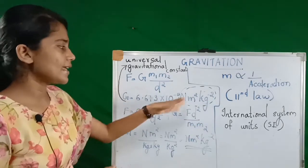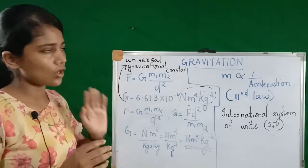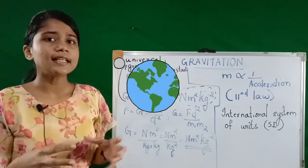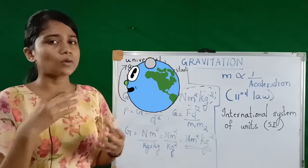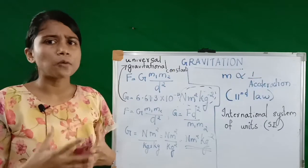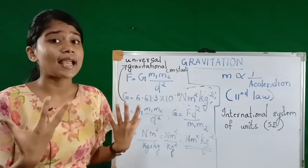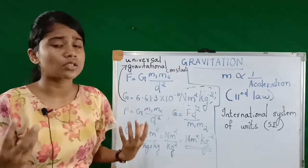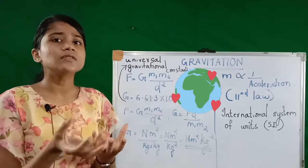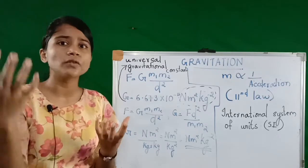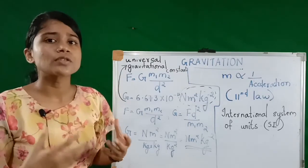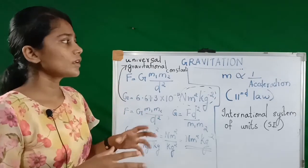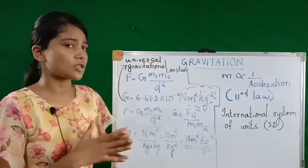That is how we calculate the SI unit for the universal gravitational constant. In the previous class you also learned that the moon rotates around the earth, and the force that helps the moon rotate around the earth is the centripetal force. You must be wondering whether the moon also shows some sort of attraction towards it. Yes — just imagine if the moon doesn't show any attraction, the earth would attract the moon towards its center and the moon would fall on the earth. But the moon is also showing some attraction so that it rotates around the earth.